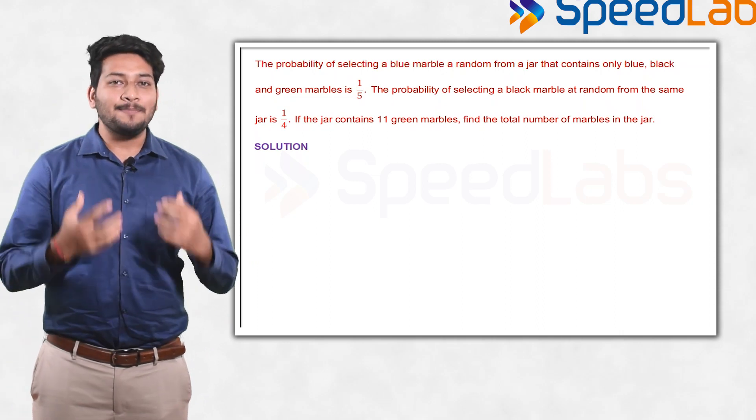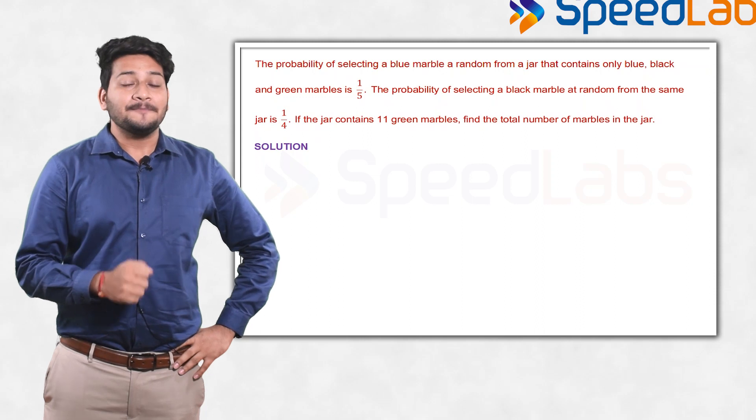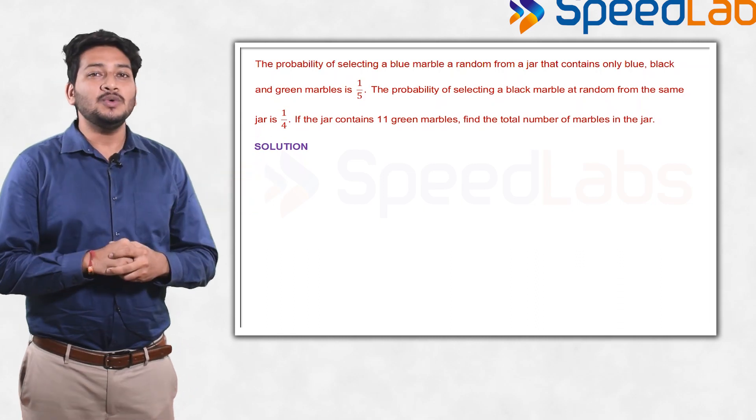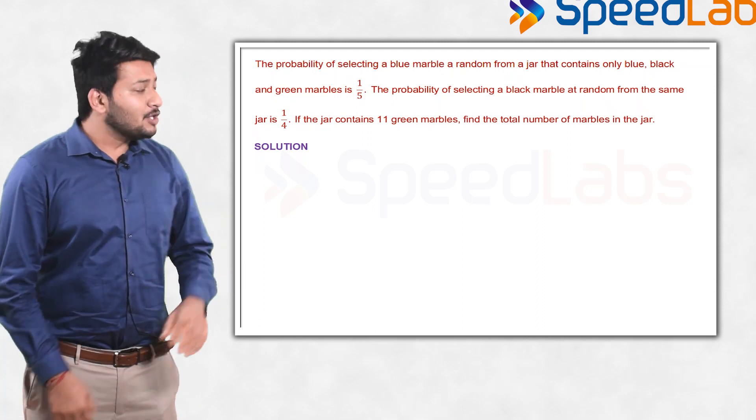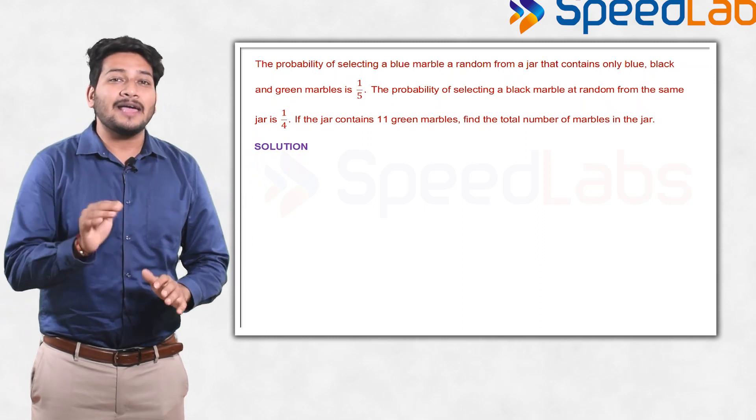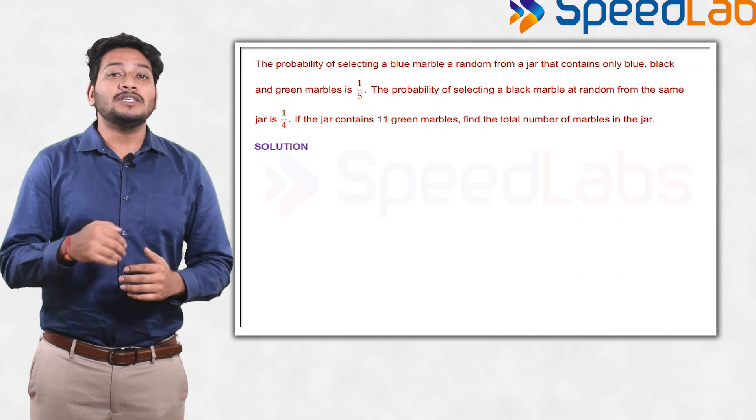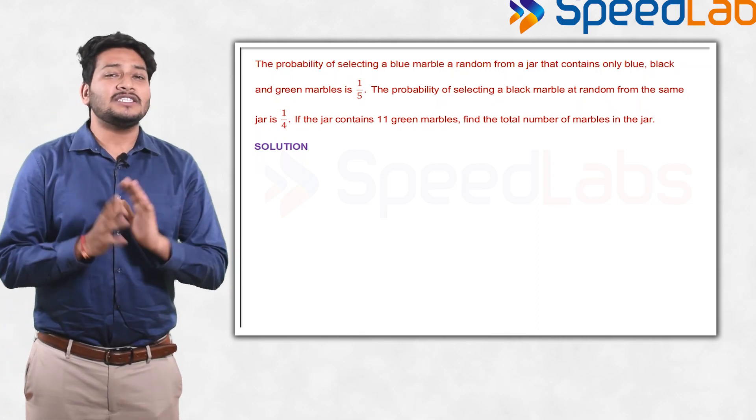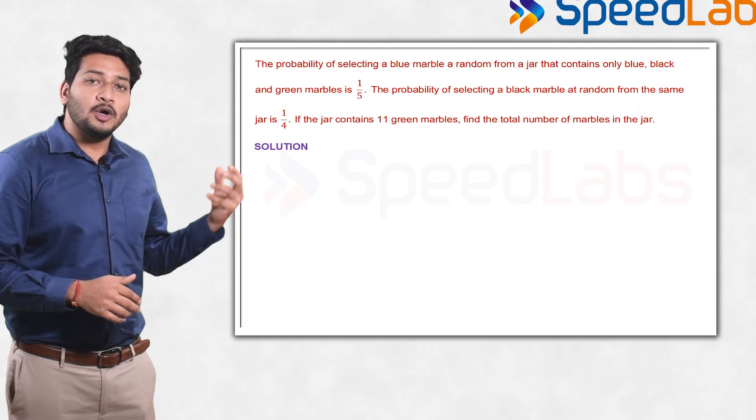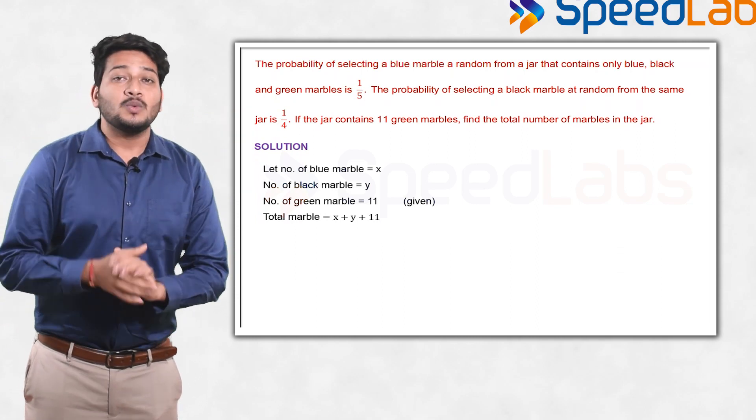Now I am going to discuss a few problems which I personally liked in the paper. The first problem which I am going to discuss is based on probability. I like this problem because in this problem the probabilities are given to you and numbers you are supposed to calculate. If you read the problem, the probability of getting a blue ball is 1/5 and the probability of getting a black ball is 1/4, and the number of green balls are 11. Now you are supposed to calculate the total number of balls. Just recall the definition of probability. What is the probability of finding a blue ball? It will be number of blue balls upon total. Let's assume number of blue balls are x and number of black balls are y.